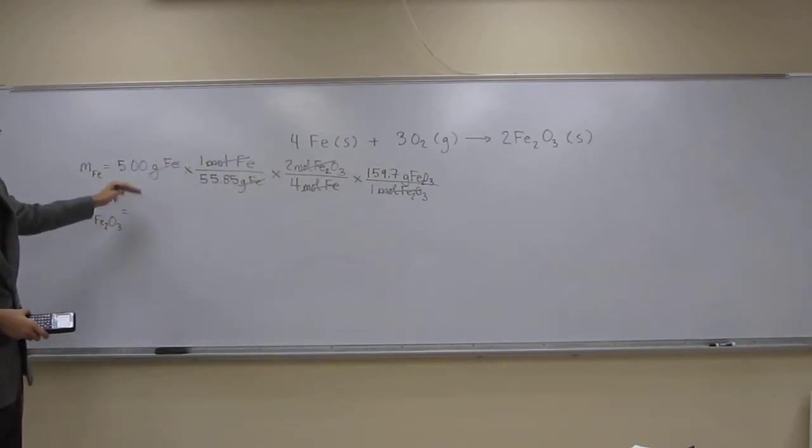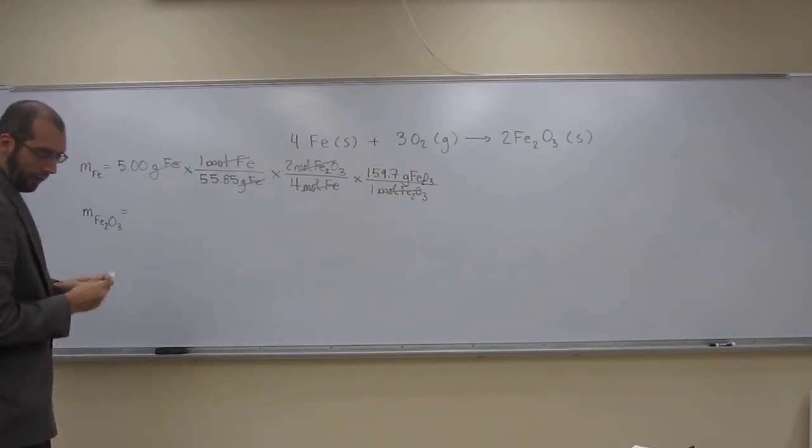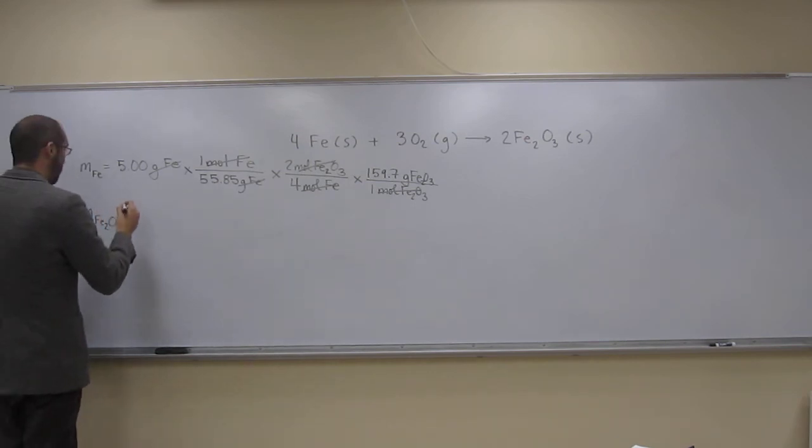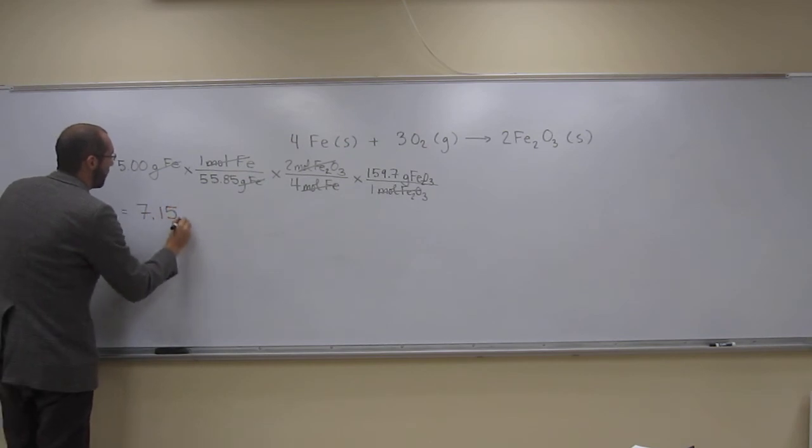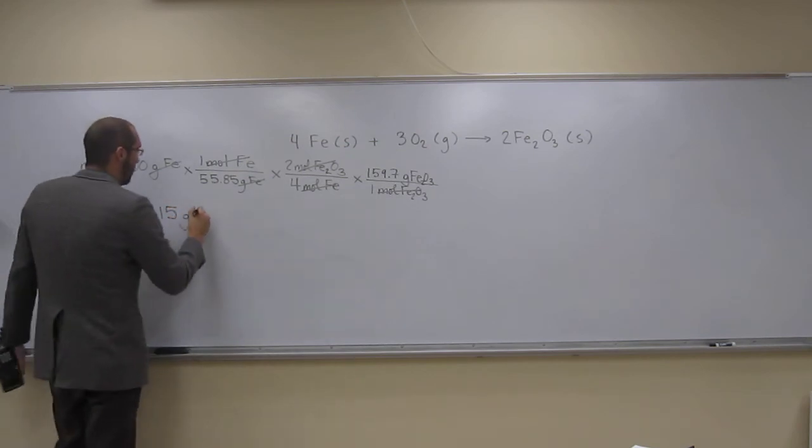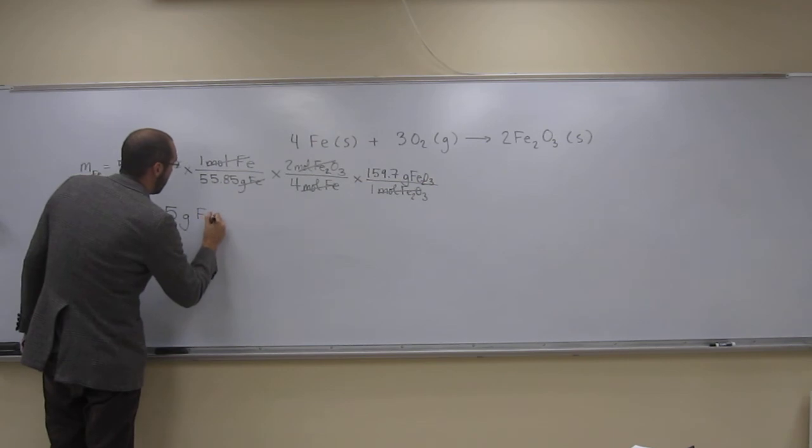So 5 divided by 55.85 times 2 divided by 4 times 159.7, and the final answer to three sig figs is going to be 7.15 grams of iron three oxide.